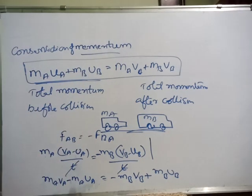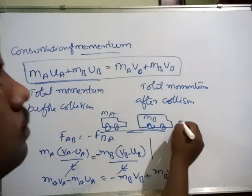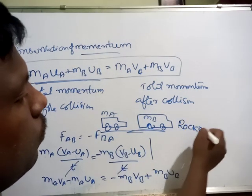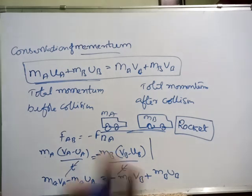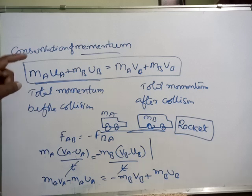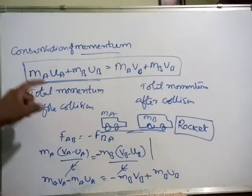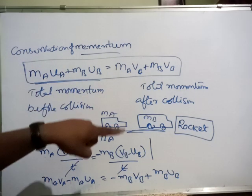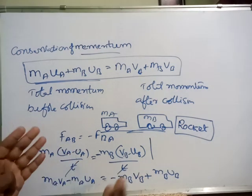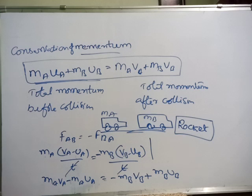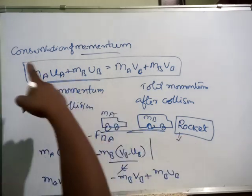In rocket propulsion also, conservation of momentum is valid. That is why the rocket principle is conservation of momentum — because the rocket will exert some gases, meaning some momentum will be changed, so the rocket will fly off. Then also some momentum will be changed, but the total momentum will be equal. So that rocket principle is conservation of momentum.